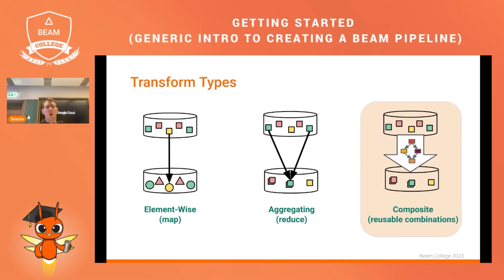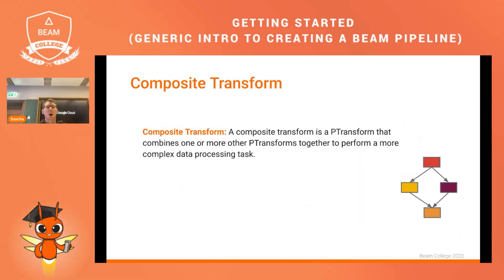The last transform type is the composite transform. Composite transforms are higher-level PTransforms built upon other transforms. When you have certain data processing logic that needs to be applied multiple times within a pipeline, you can define a composite transform that contains various other transformations and apply it as a single unit, enabling code reusability and modular data processing logic.